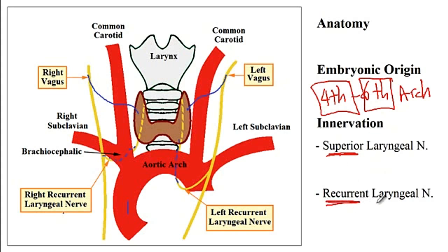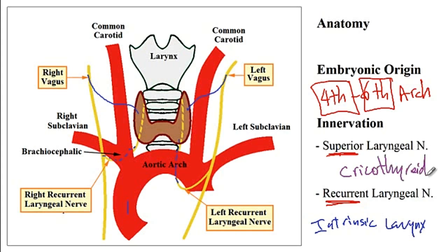Regarding innervation, the recurrent laryngeal nerve innervates all the intrinsic muscles of the larynx with the exception of the cricothyroid muscle, which is innervated by the superior laryngeal nerve. The superior laryngeal nerve also innervates the laryngeal mucosa above the vocal folds, while the recurrent laryngeal nerve innervates the laryngeal mucosa below the vocal folds.